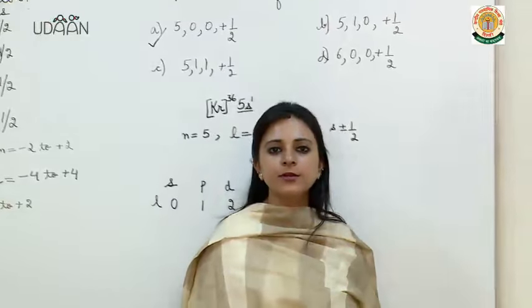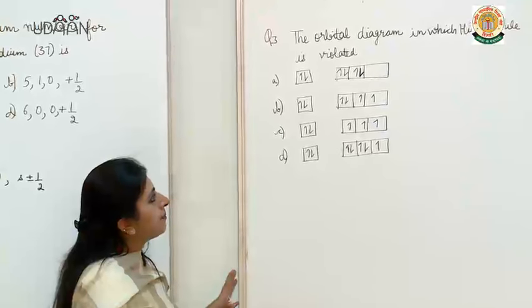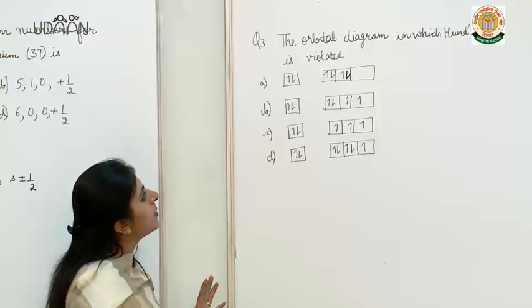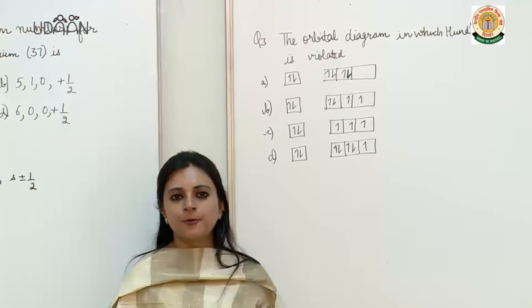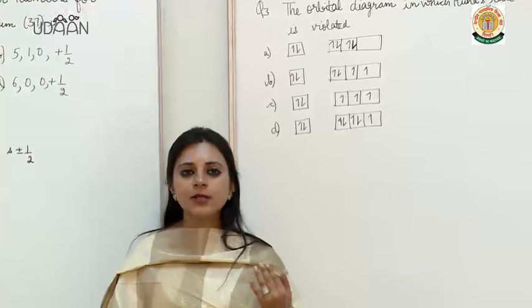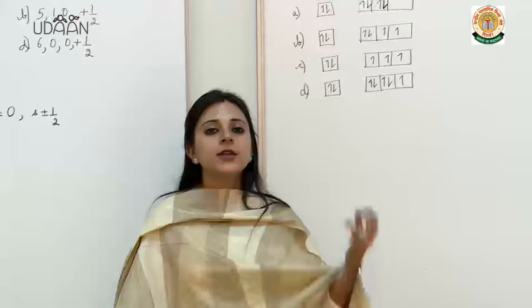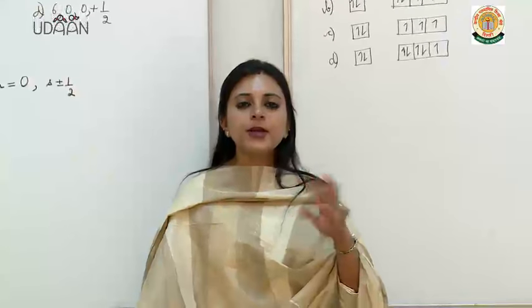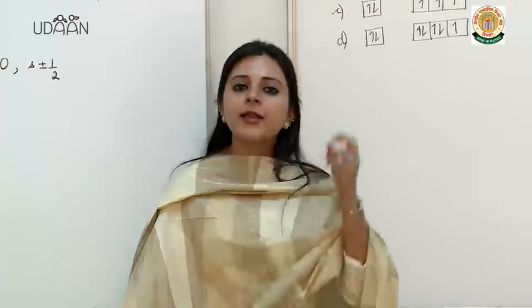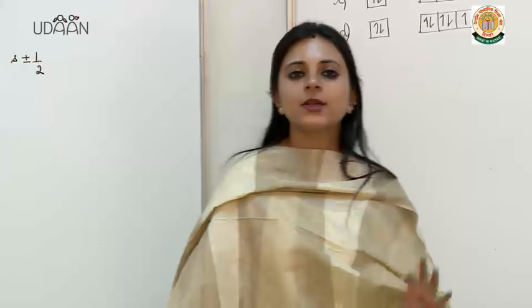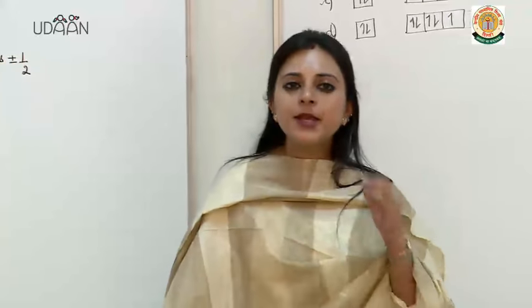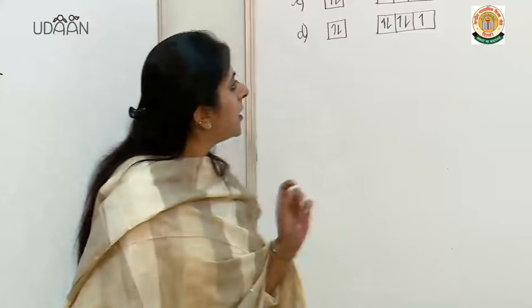Now let us understand question number 3: the orbital diagram in which Hund's rule is violated. Hund's rule of maximum multiplicity says that first the orbital is singly filled and then the pairing takes place. Electron pairing in p, d and f orbitals can take place only after each orbital is singly filled.